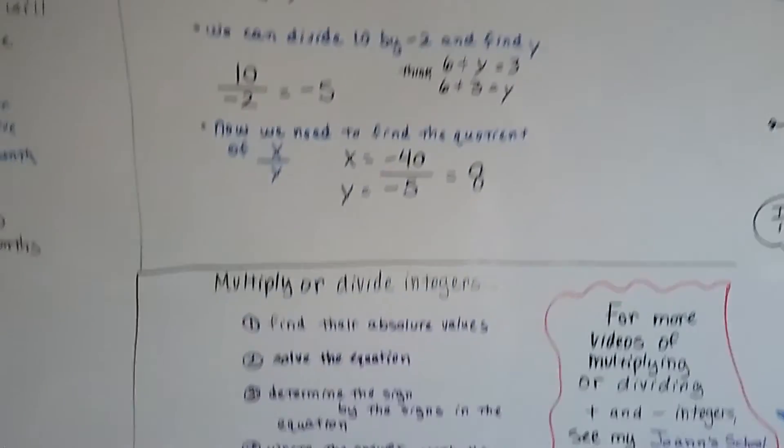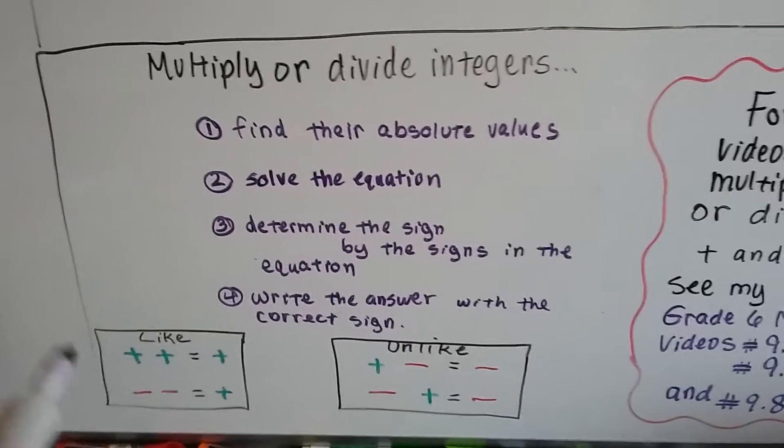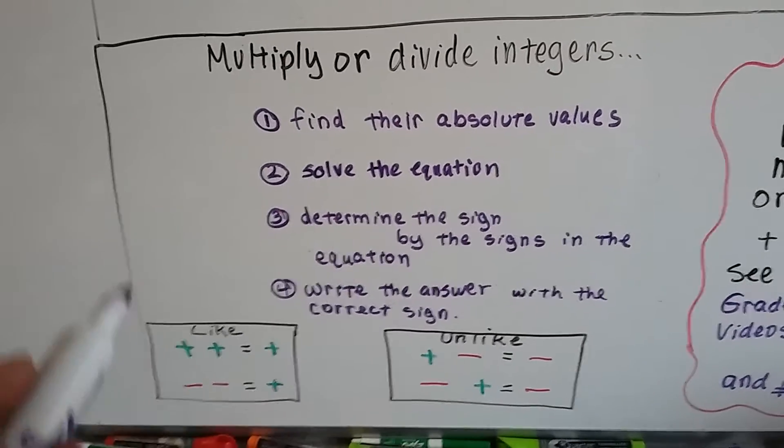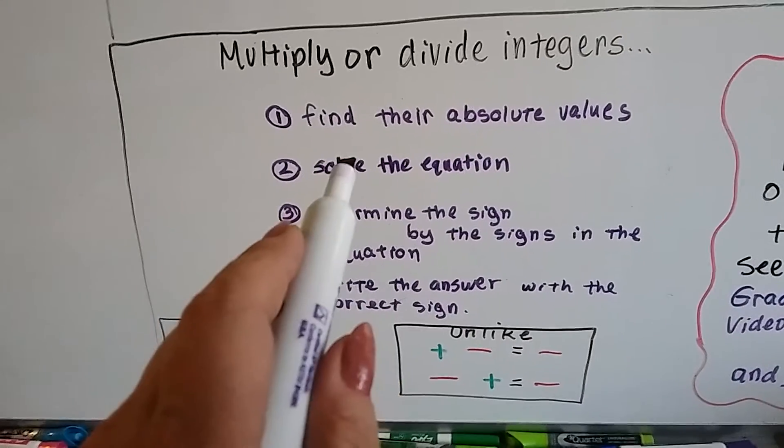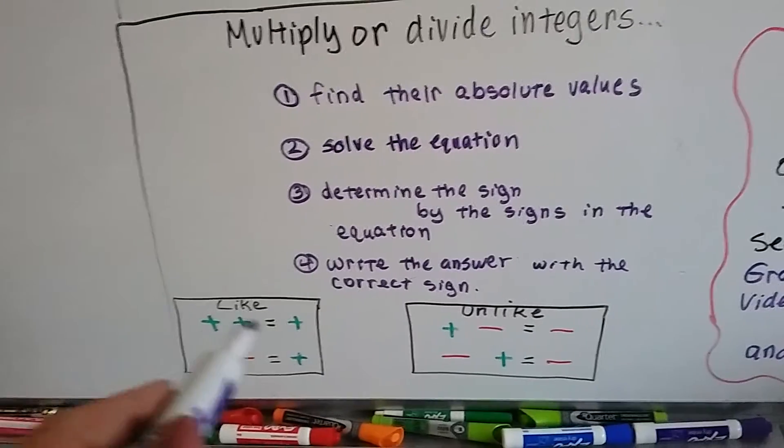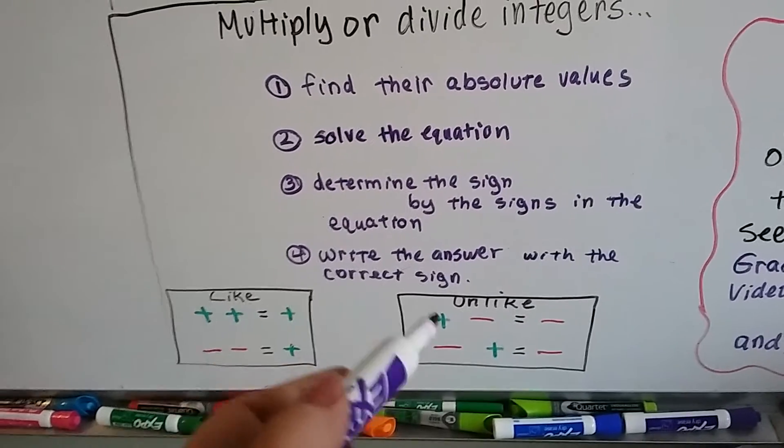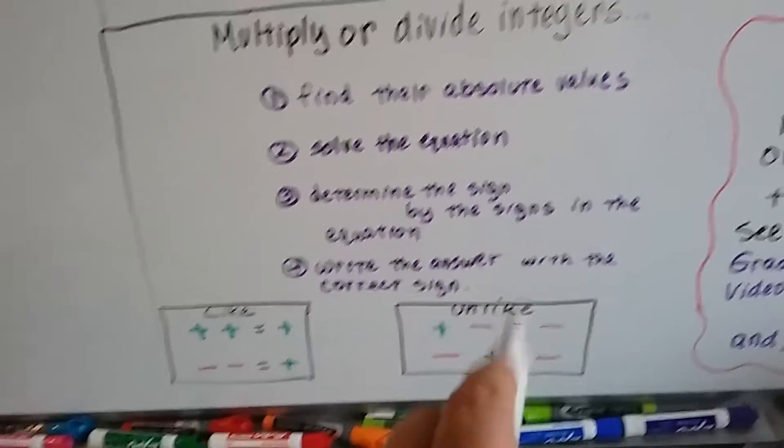So multiplying or dividing integers: you find the absolute values, you solve the equation for those absolute values, then you determine the sign by the signs in the equation. If they're like signs it's going to be positive. If they're unlike, they're going to be negative. You write the answer with the correct sign.